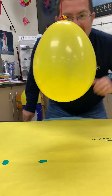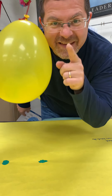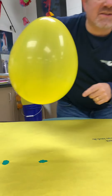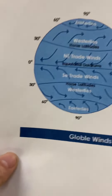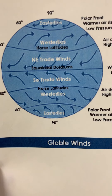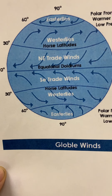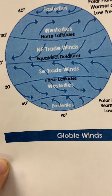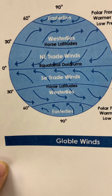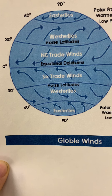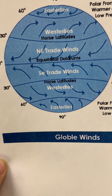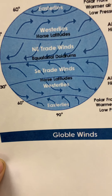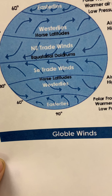Hey everybody, fun science video for you. One of the things we're going to do first is I'm going to show you something. I want you to draw a picture of the winds you see on this little globe of the earth. Get the 90s, the 60s, the 30s, the 0s in, and label the winds. So pause the video right now and draw those.